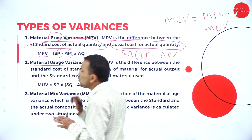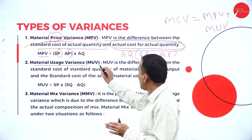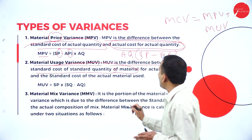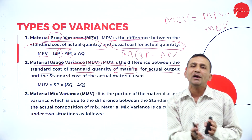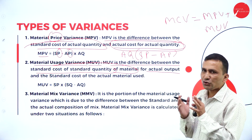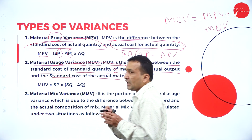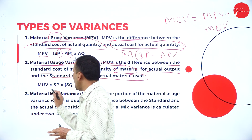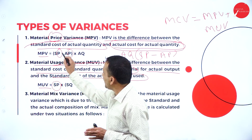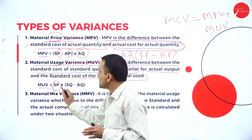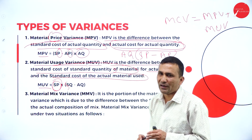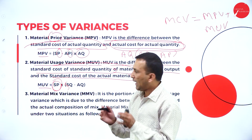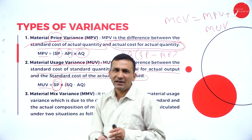The Material Usage Variance (MUV) is the difference between the standard cost of standard quantity of material for actual output and the standard cost of the actual material used. The formula is: MUV = Standard Price × (Standard Quantity − Actual Quantity).